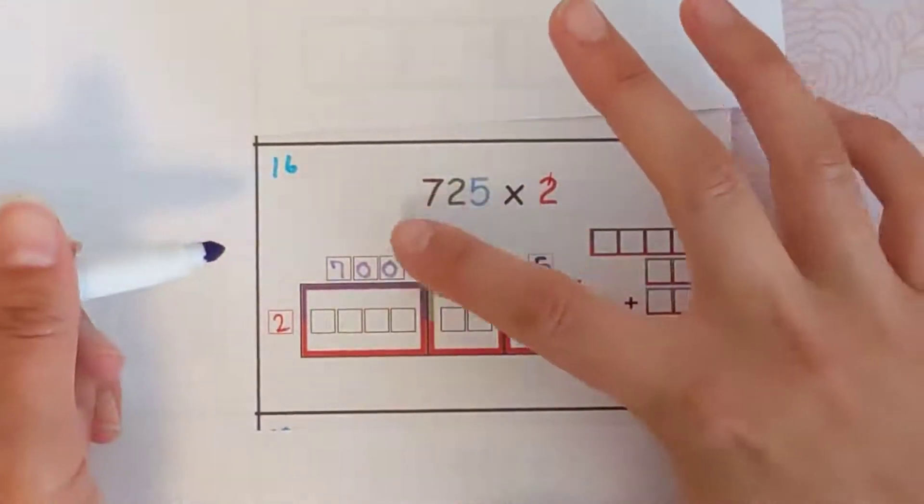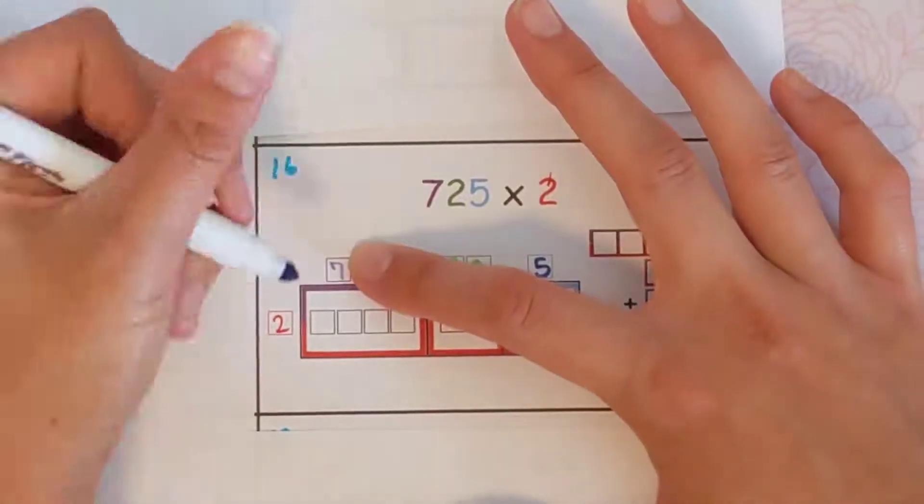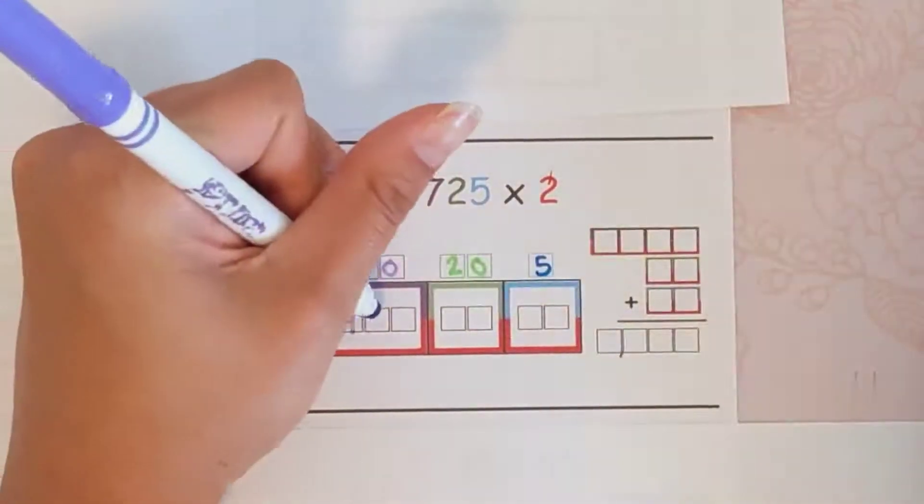So for 2 times 700, you're really going to do 2 times 7, which is 14, and then add the zeros back in.